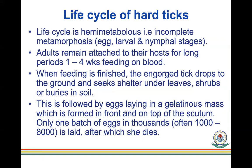The life cycle is hemimetabolous — incomplete metamorphosis — going through egg, larva, and nymphal stages without a pupal stage. The tick remains attached to the host for long periods, up to four weeks, feeding on blood. When feeding is finished, the engorged tick drops to the ground and seeks shelter under leaves, shrubs, or in soil. The female then lays one batch of one thousand to eight thousand eggs and dies.